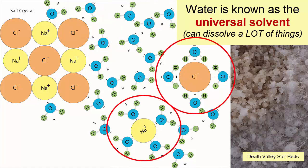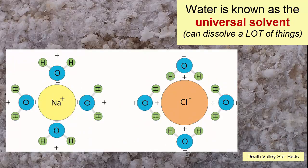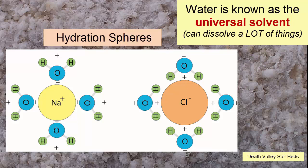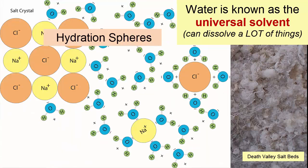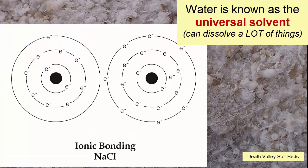That ion is now what we refer to as dissolved in water. It is a single ion surrounded by a sphere of water molecules called a hydration sphere. As long as there's enough water molecules available, the entire solid can dissolve through this process.